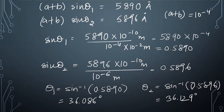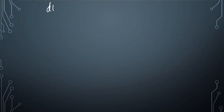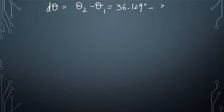Taking the inverse sine, theta 1 equals 36.086 degrees and theta 2 equals 36.129 degrees. The angular separation d theta equals theta 2 minus theta 1 equals 36.129 minus 36.086, which equals 0.043 degrees. This is our angular separation for the first order spectrum.